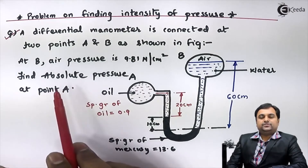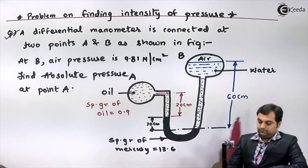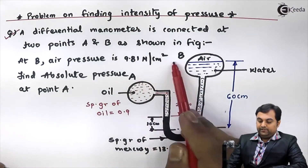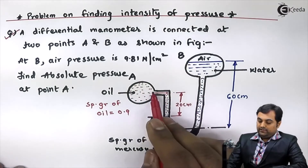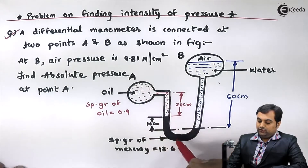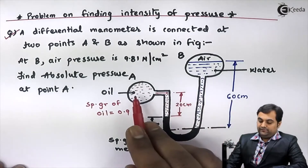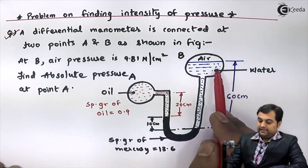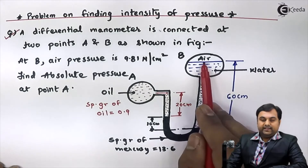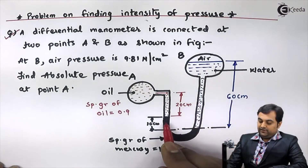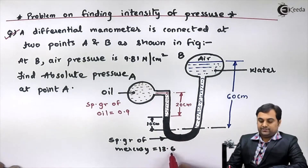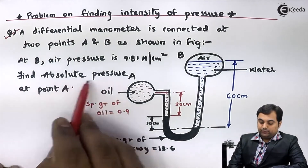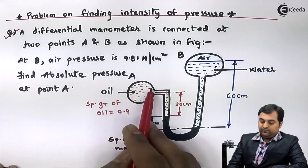Based on this question we have to write the data. As we can see in the diagram, at A and B there are two different pipes, and to those pipes a differential U-tube manometer is connected. On the left hand side we have oil whose specific gravity is 0.9. On the right hand side we have water as well as air. We also have mercury whose specific gravity is given as 13.6.